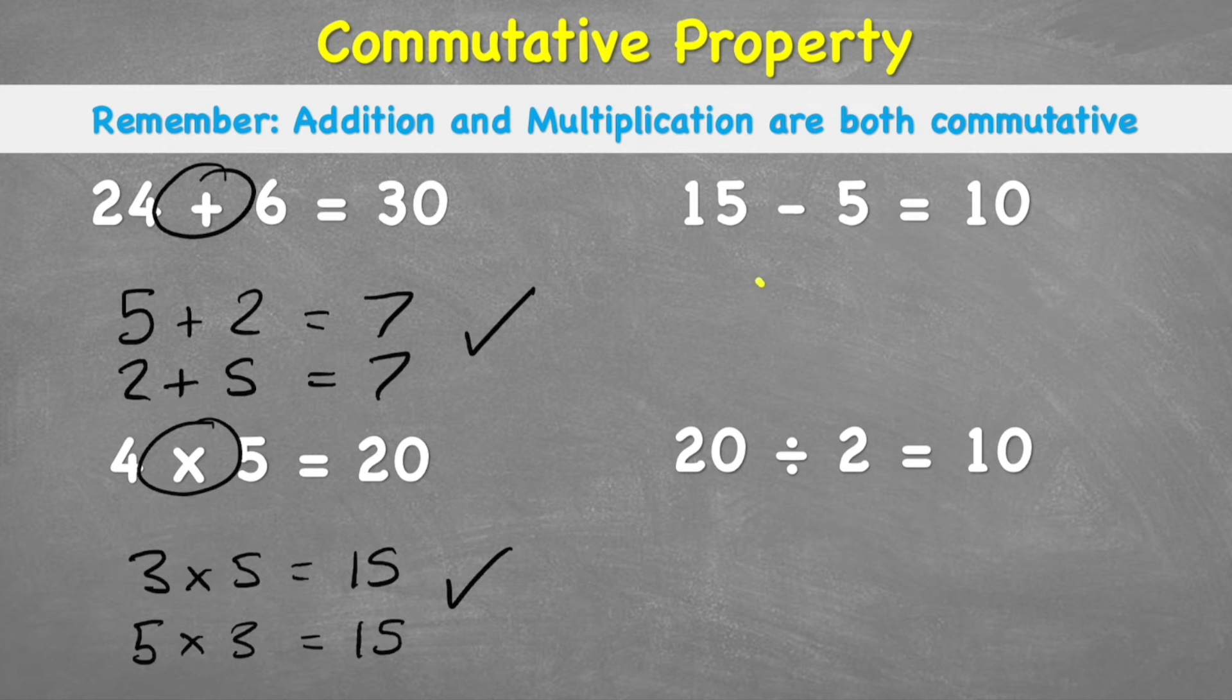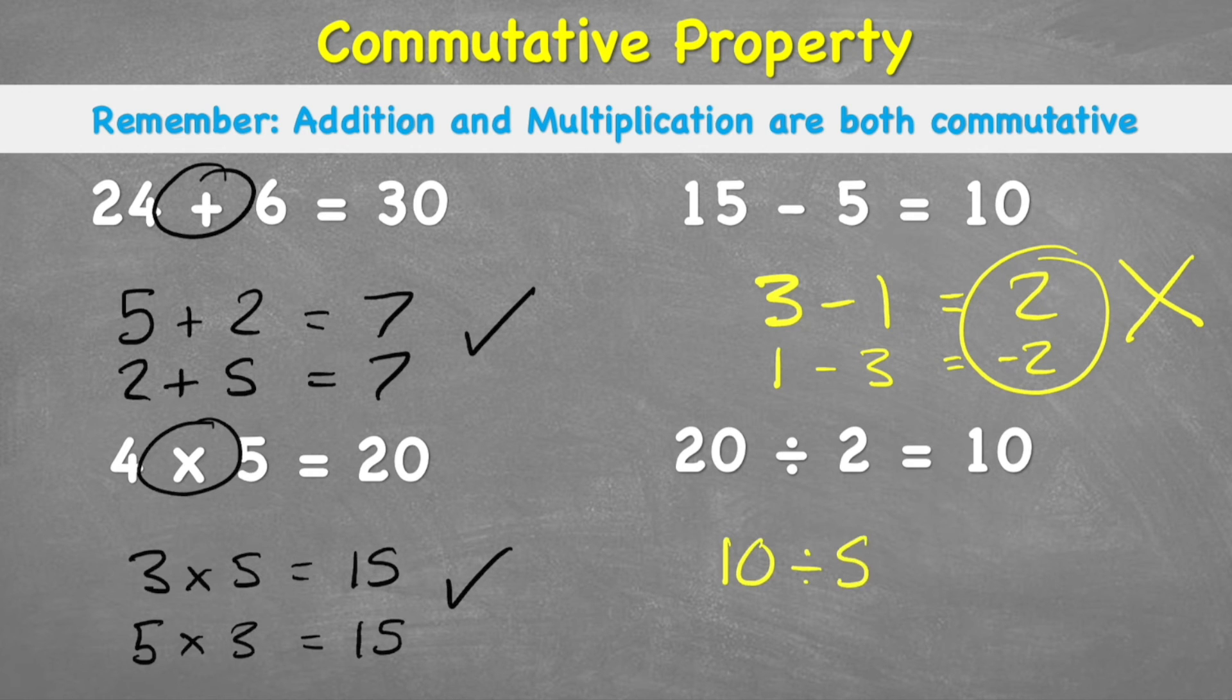Let's check subtraction. Let's do 3 subtract 1 equals 2. And then 1 subtract 3, uh-oh, equals negative 2. Not the same, not commutative. 10 divided by 5 equals 2. 5 divided by 10 does not equal 2. Not commutative.